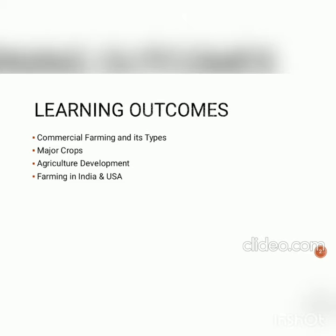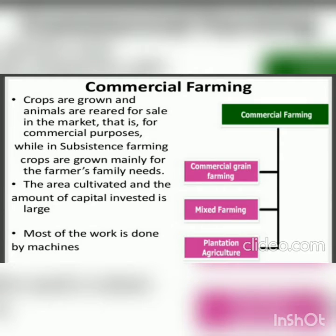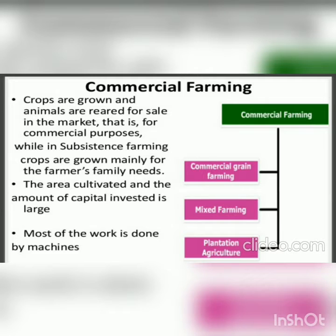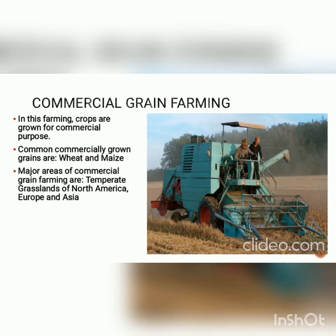In commercial farming, crops are grown and animals are reared for sale in the market — that is, for commercial purpose. While in subsistence farming, crops are grown mainly for the farmer's family needs. The area cultivated and the amount of capital invested is large, and most of the work is done by machines.